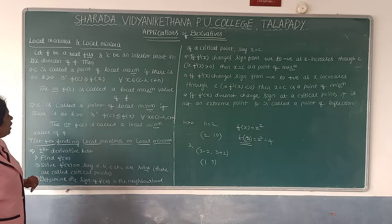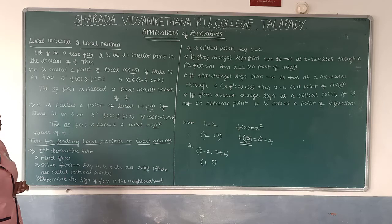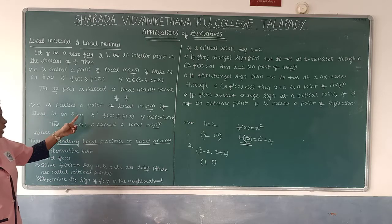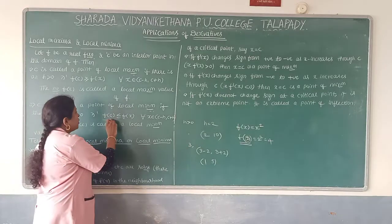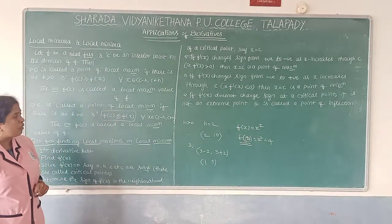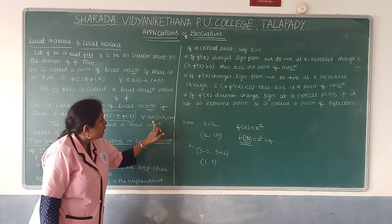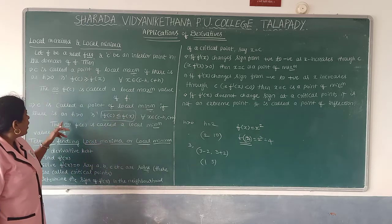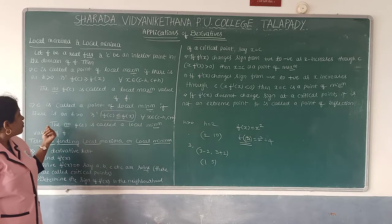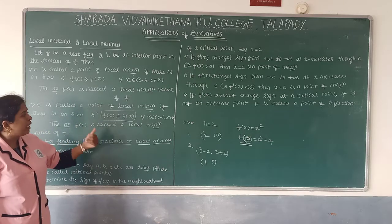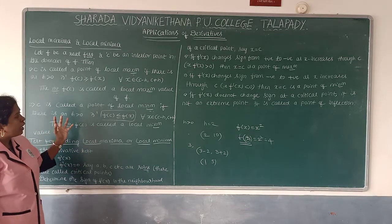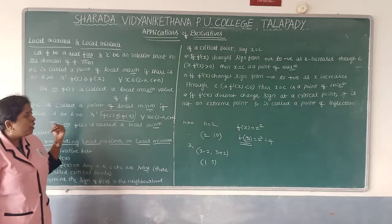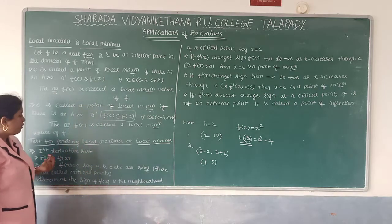Similarly, F is said to have a local minimum at c if there exists h > 0 such that F(c) ≤ F(x) for all x in (c − h, c + h). When this condition is satisfied, c is called a point of local minimum. The number F(c) is called the local minimum value of F.